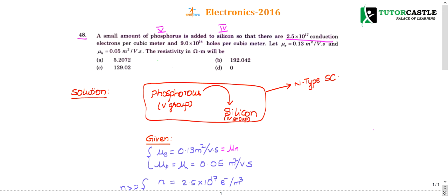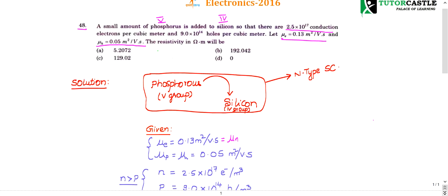The mobility of electrons is given as 0.13 meter squared per volt second, and mobility of holes is 0.05 meter squared per volt second. The question asks: what is the resistivity?